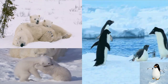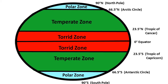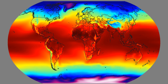Let us quickly revise all the heat zones. First, the torrid zone, which lies between 23.5° North to 0° to 23.5° South. Second, the temperate zone, which lies between 23.5° North to 66.5° North and 23.5° South to 66.5° South. And lastly, the frigid zone, which lies between 66.5° North to the North Pole and 66.5° South to the South Pole. Now, why are the Himalayas very cold throughout the year in spite of being near the equator? I will be waiting for your answers.